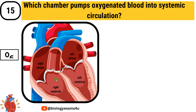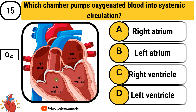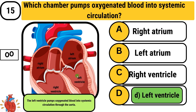Question number 15: Which chamber pumps oxygenated blood into systemic circulation? Option A: right atrium. Option B: left atrium. Option C: right ventricle. Option D: left ventricle. The answer is left ventricle. The left ventricle pumps oxygenated blood into systemic circulation through the aorta.